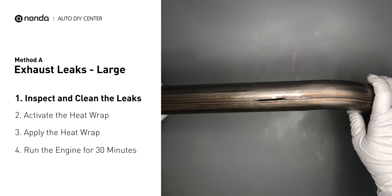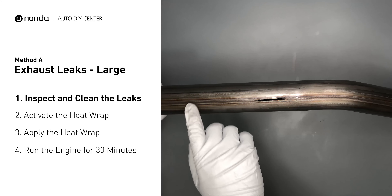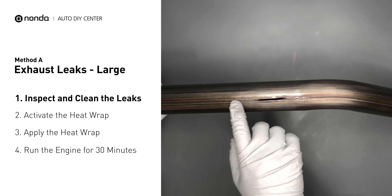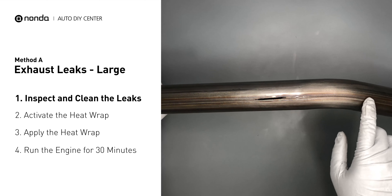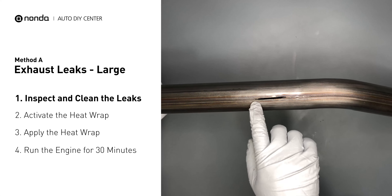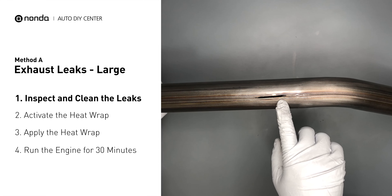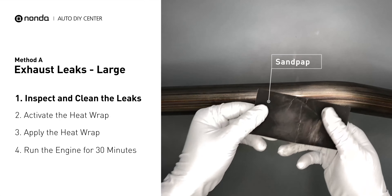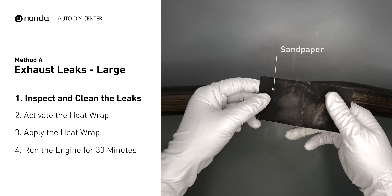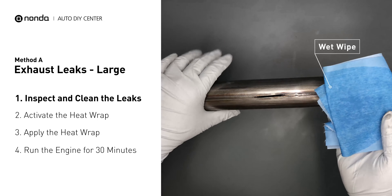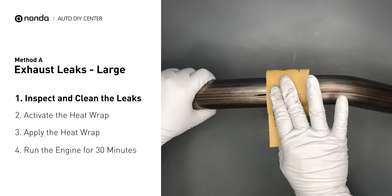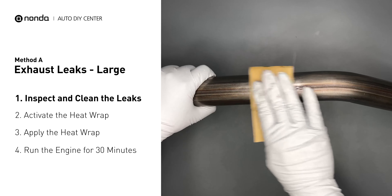Exhaust pipes are made out of rolled steel, and there is a welded seam on it. Like this one, the seam will often rot a large leak. First, get a sandpaper and a wet wipe to clean the leaking area for better application.